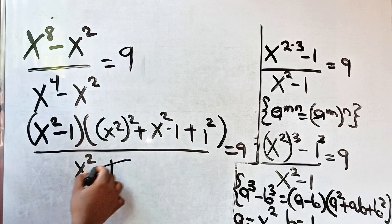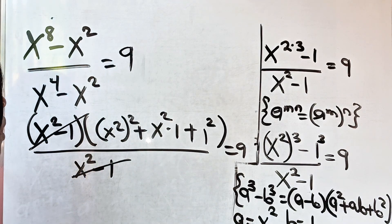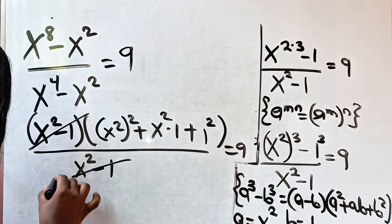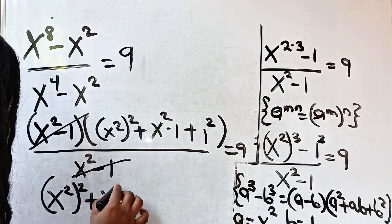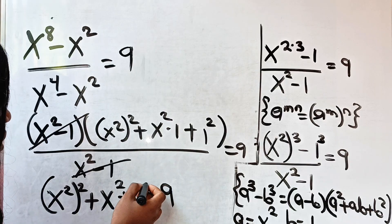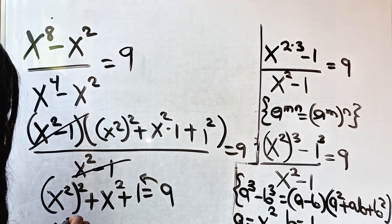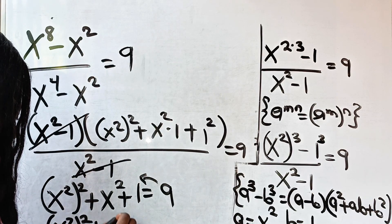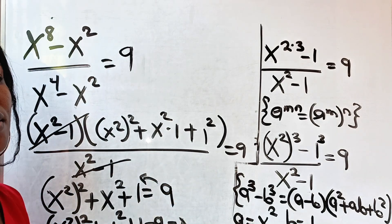Now we have x squared minus 1 in both numerator and denominator, so that cancels. What we have left is x to the power of 4 plus x squared plus 1, is equal to 9. Now let's transfer 9 to the other side of the equation, so we have x squared all squared plus x squared plus 1 minus 9 equals 0.